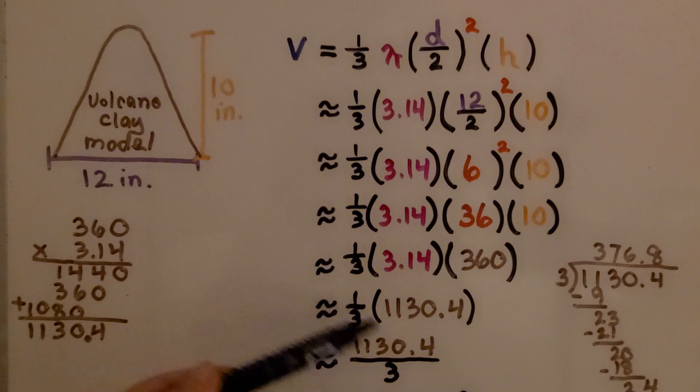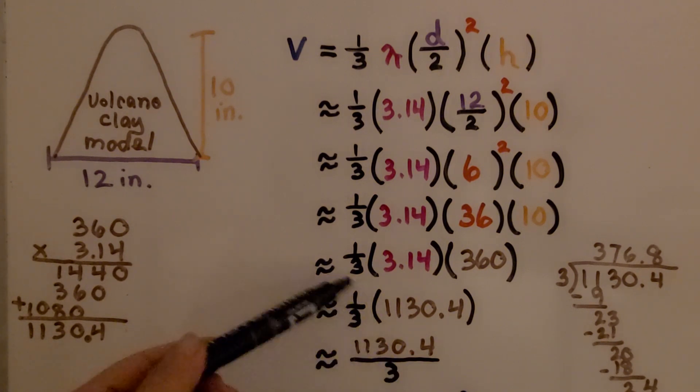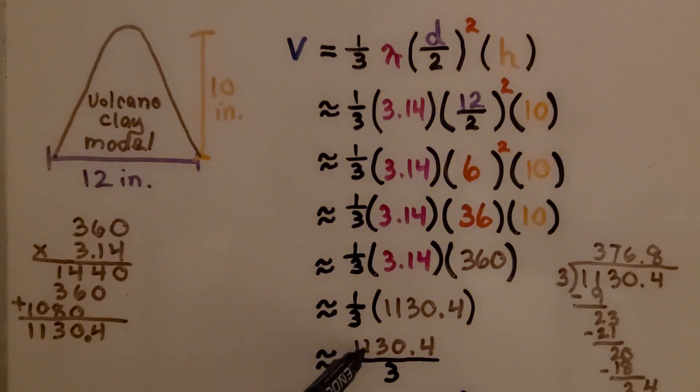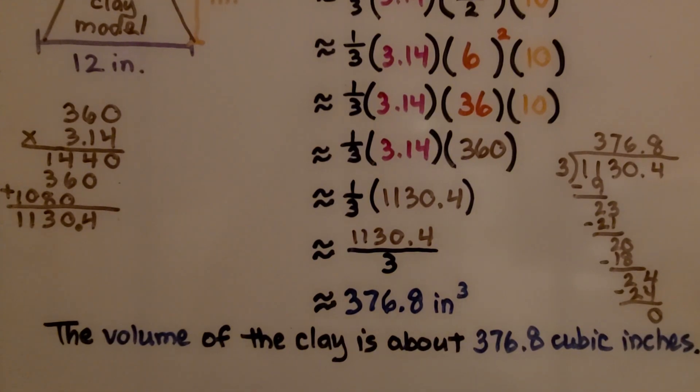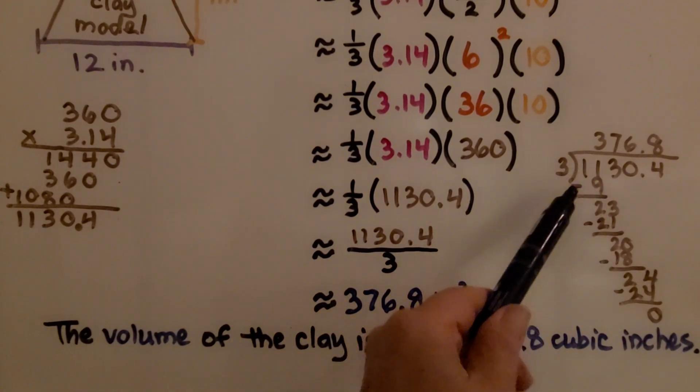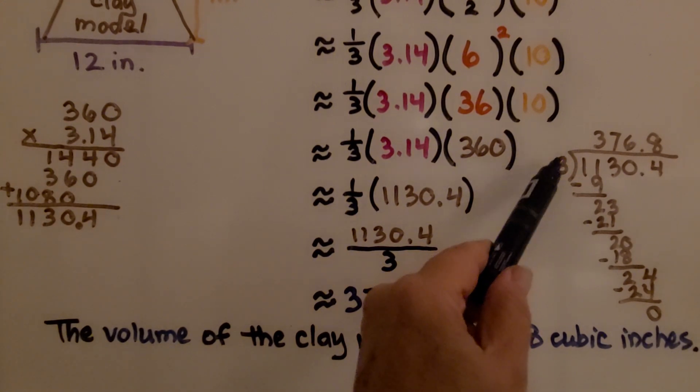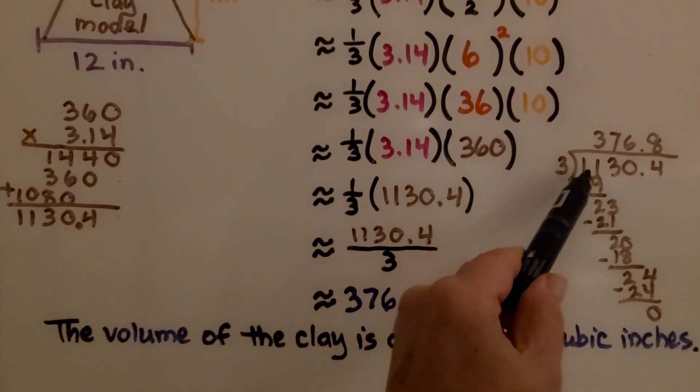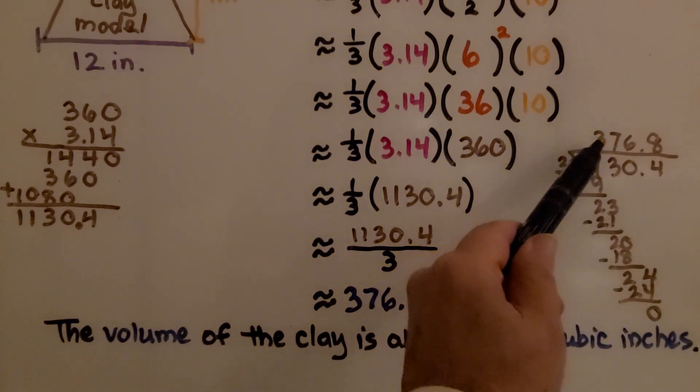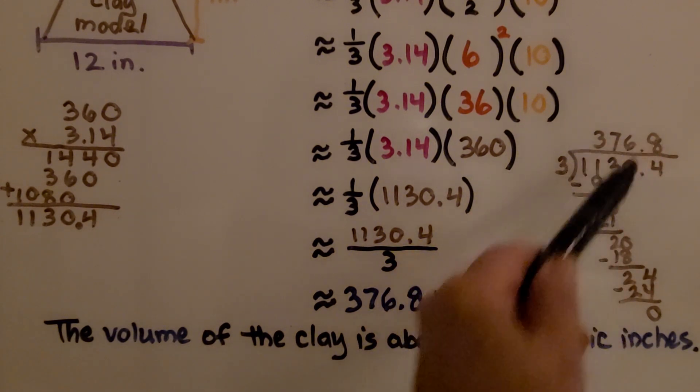It's telling us we need to multiply this by one-third, which is the same as dividing by 3 because multiplication and division are inverses. So we could do 1130.4 divided by 3. I found it was 376.8.